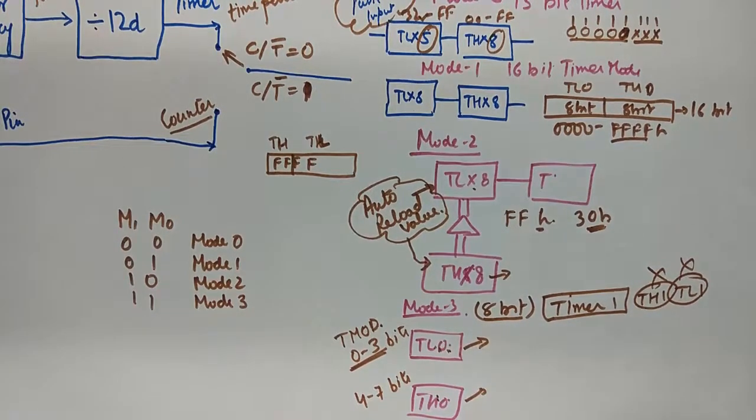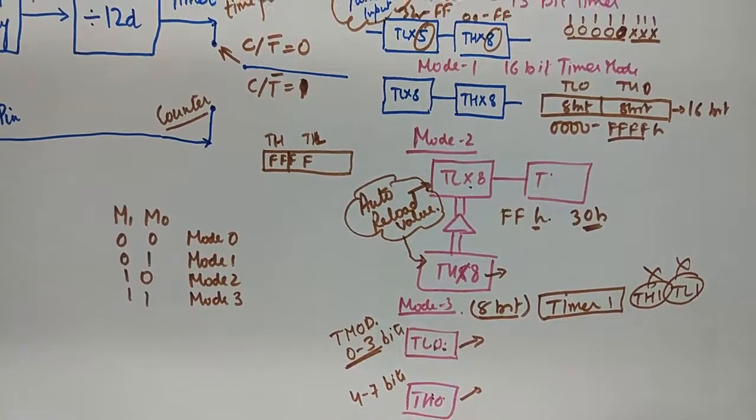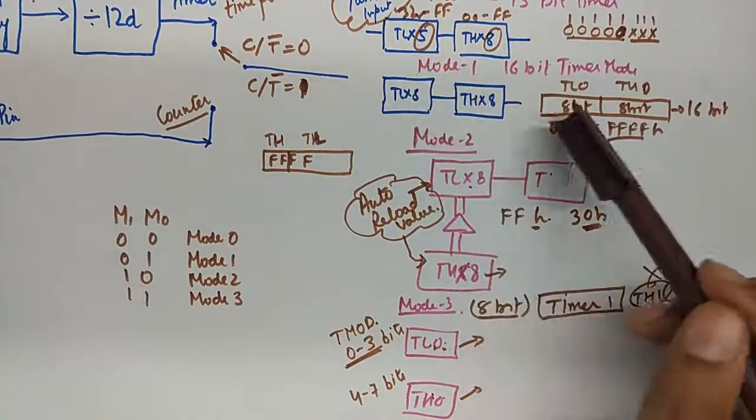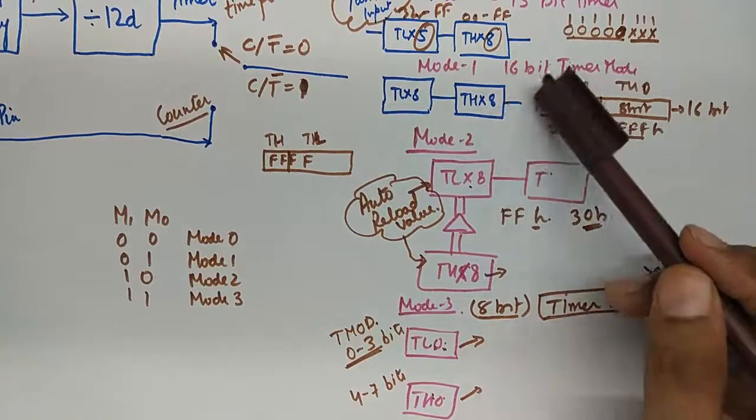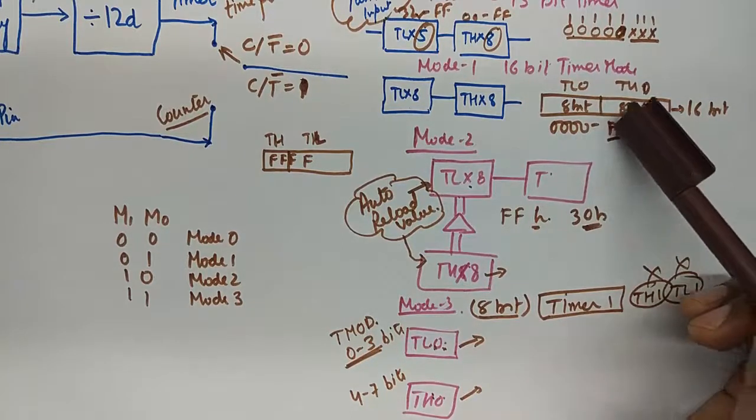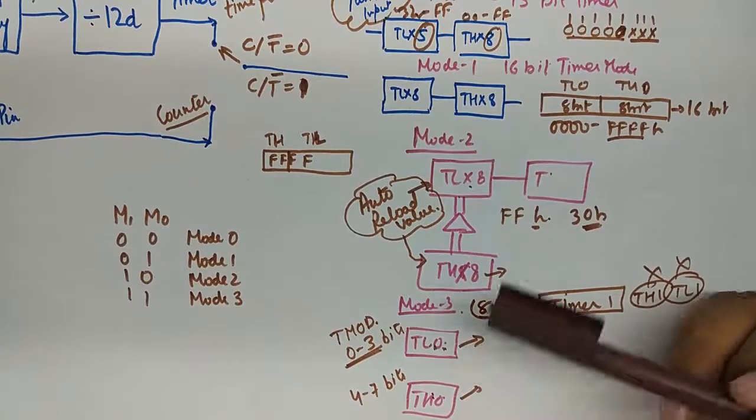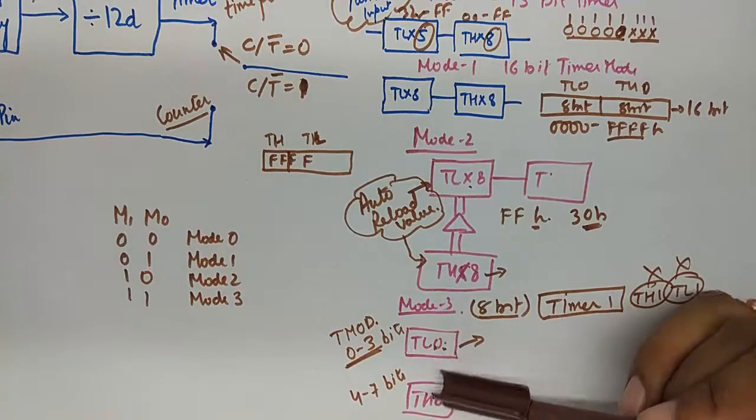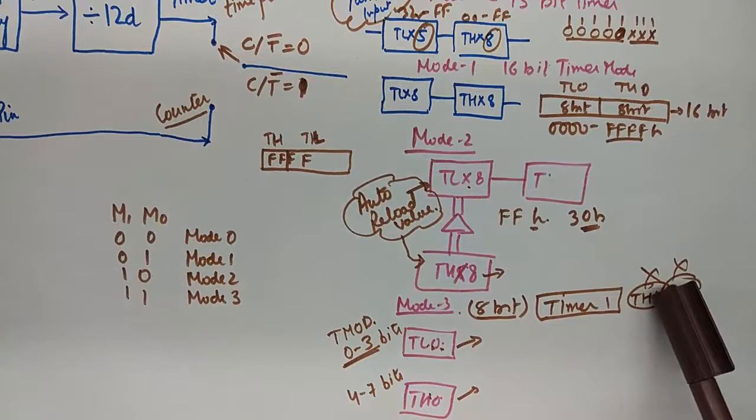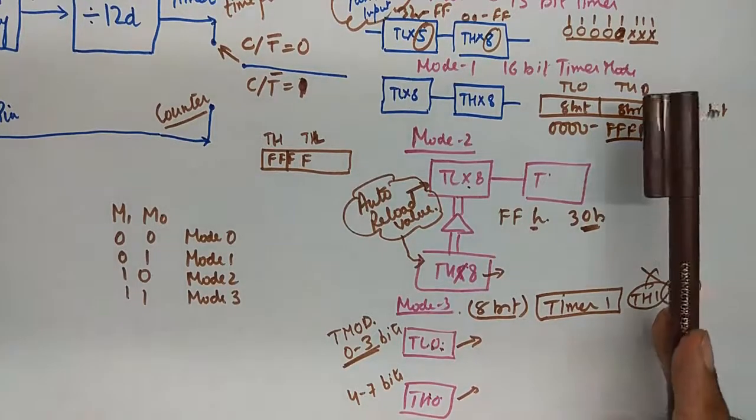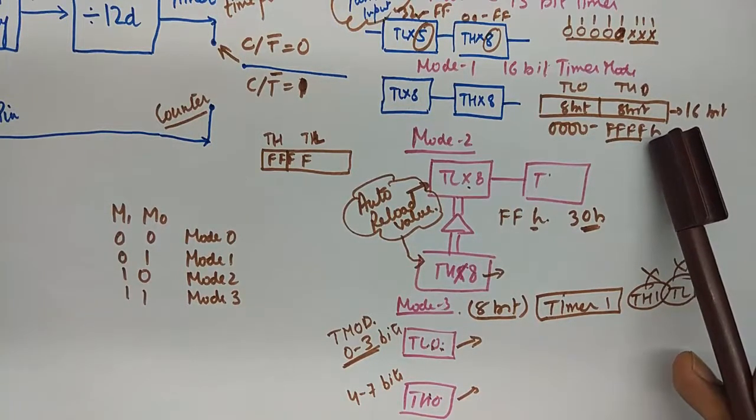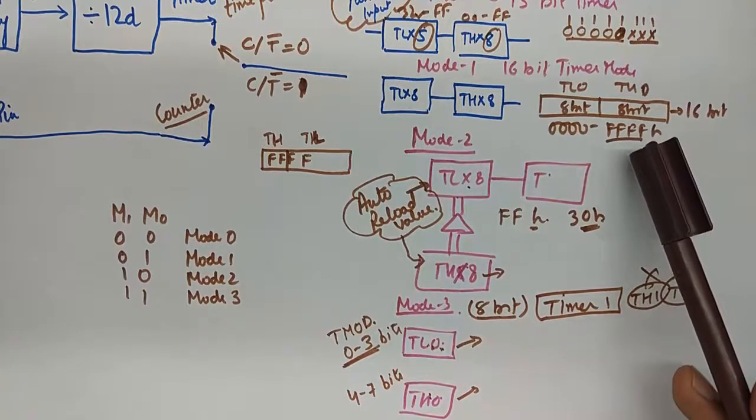So in other words, you can think of this mode as half of mode 1. Mode 1 is a full-fledged simple 16-bit timer mode, and when it overflows at FFFFH, here it will overflow at FFH. But the two timers which are going to be used are TL0 and TH1. And timer 1 is not participant in mode 3. In mode 1, however, timer 0 uses a 16-bit register set and timer 1 also uses a 16-bit register set.